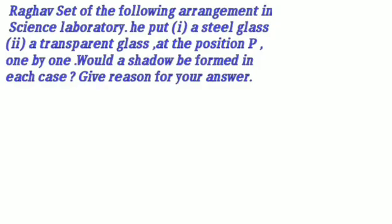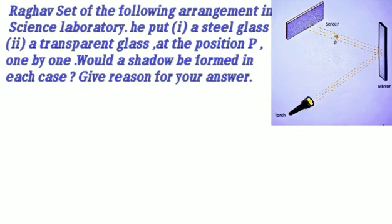Question 3: Raghav set up the following arrangement in science laboratory. He put (i) a steel glass, (ii) a transparent glass, at the position P one by one. Would a shadow be formed in each case? Give reason for your answer.